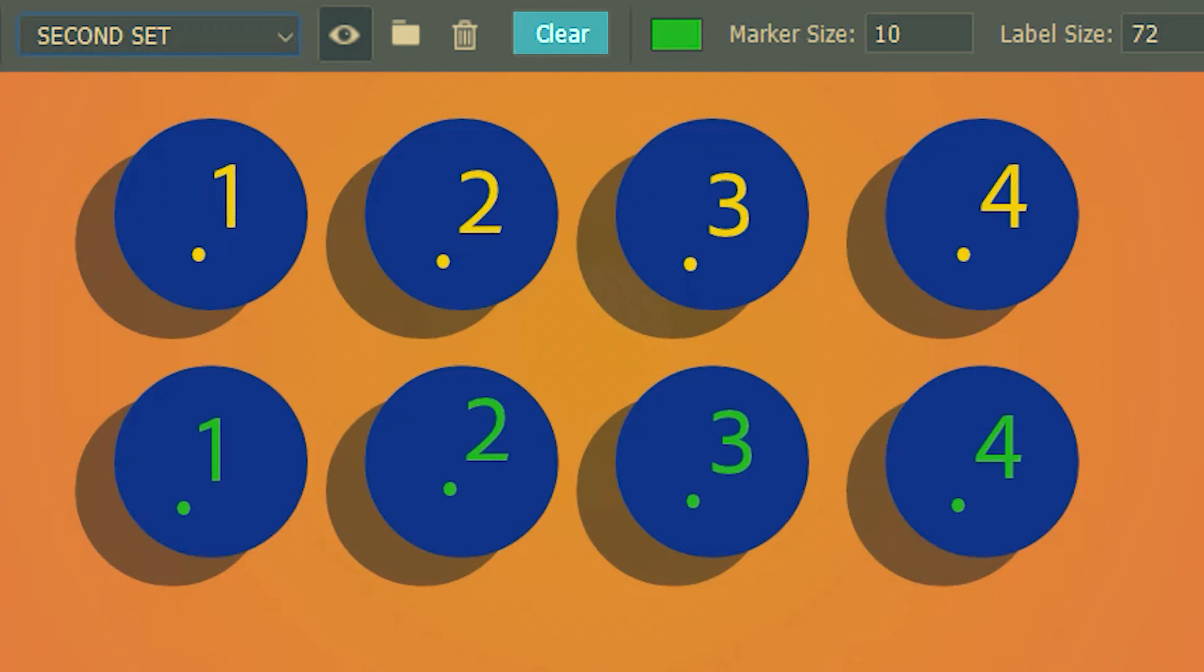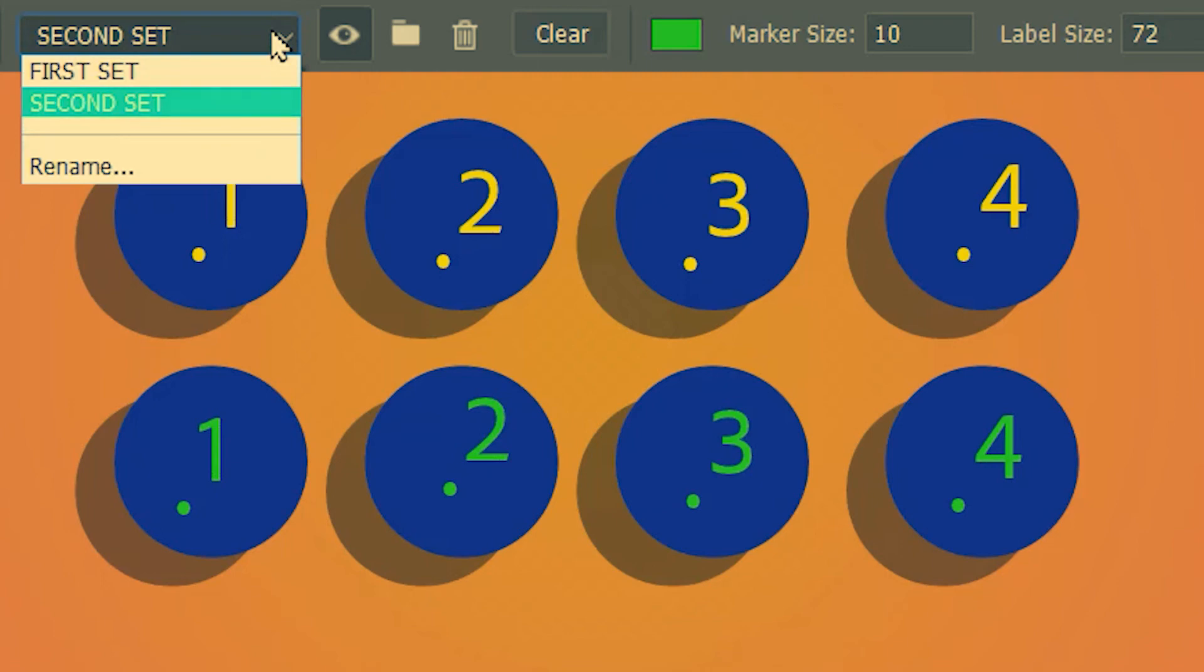Now with the clear option the group stays, only the counters get deleted. So if I want to delete just the counters for the second group or the second set, I'll make sure that the second set is selected.